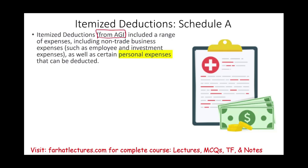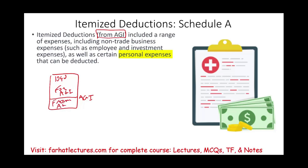What does that mean? On your 1040, there is a line called adjusted gross income. We have certain deductions that are deducted before AGI — we call them 'for AGI.' Itemized deductions are deducted after, or 'from,' adjusted gross income.